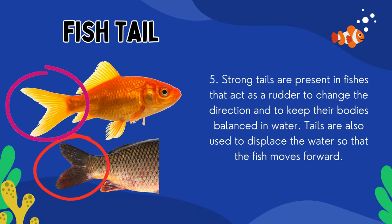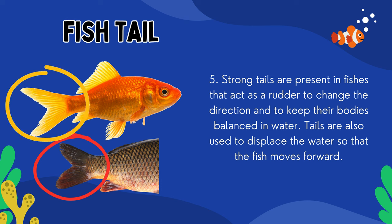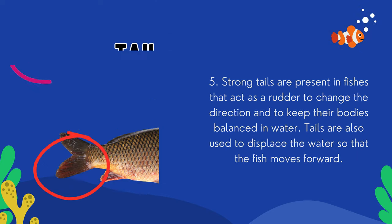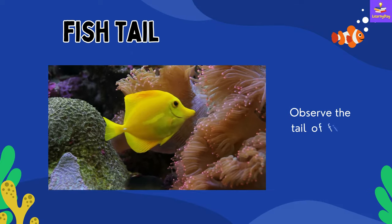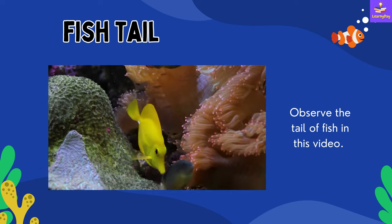Number 5: The tail of a fish. Strong tails are present in fishes that act as a rudder to change the direction and to keep their bodies balanced in water. Tails are also used to displace the water so the fish moves forward. In this clipping of fish, you can clearly see the tail of this fish.